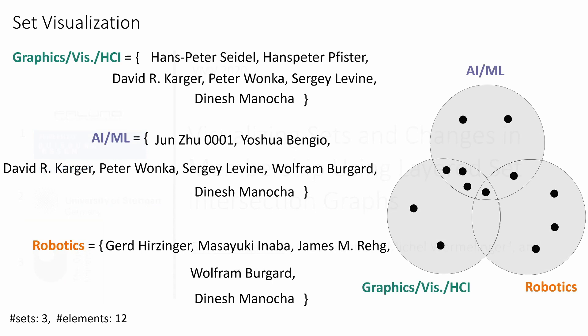Sets are collections of elements commonly used to model data in many applications. For instance, to analyze publication data, we can model research fields as sets and researchers as elements. If a researcher publishes in a research field, they become a member of the corresponding set. Venn diagrams are commonly used to visualize sets — they are intuitive and help in understanding the overlap among sets. We show a small sample of a computer science research dataset, representing three research fields: Graphics with HCI, AI/ML, and Robotics — referred to as base sets.